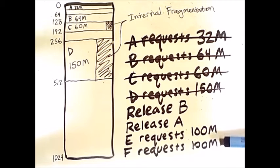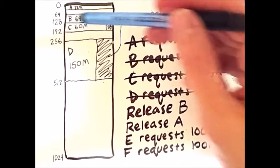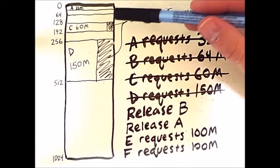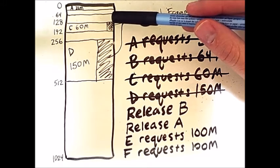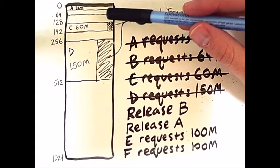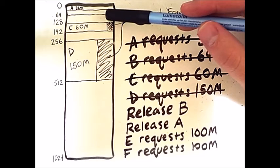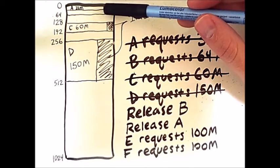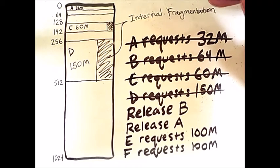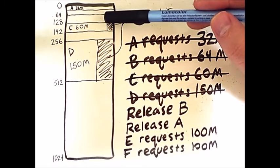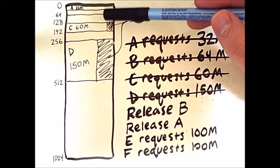So when B is released from memory, we clear it out, and we are left with a free 64 megabyte slot of memory. Now, the corresponding buddy of this 64 megabyte slot is the 64 megabyte slot immediately above it, but that region of memory is actually split into two by process A. So removing B does not do anything to change the boundaries of memory partitions that currently exist.